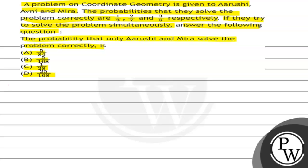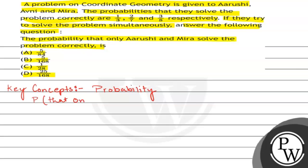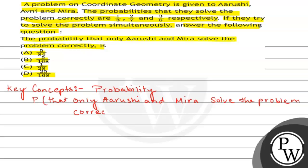The key concept is that this question is related to probability. We have to find the probability that only Aryoshi and Mira solve the problem correctly. The given probability of Aryoshi solving the problem correctly is 1/3.